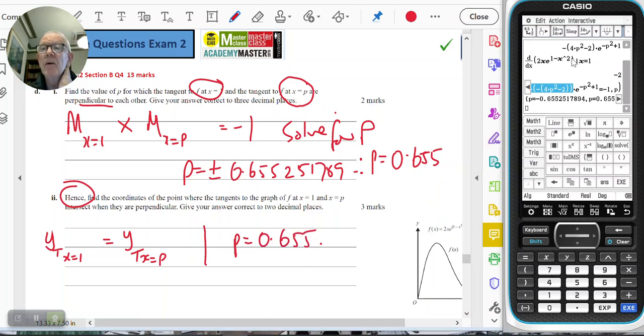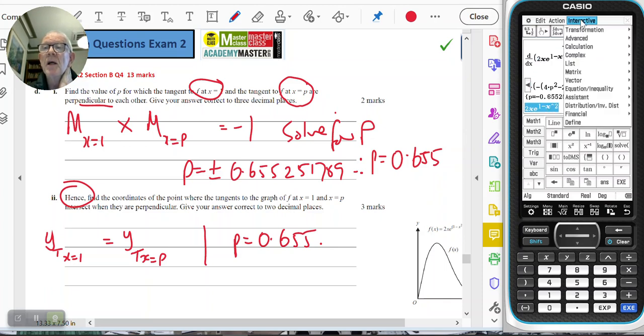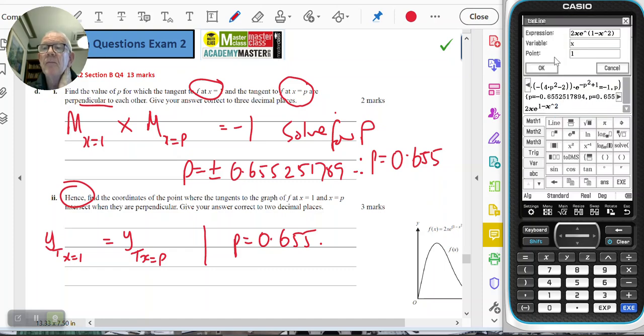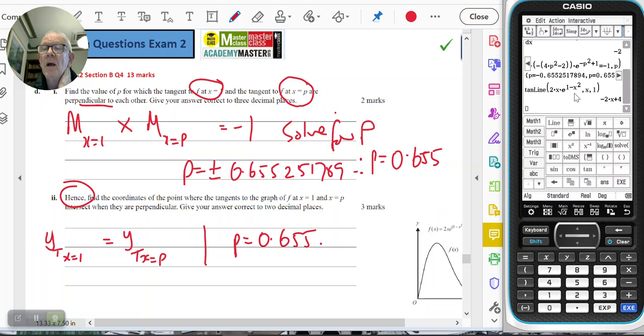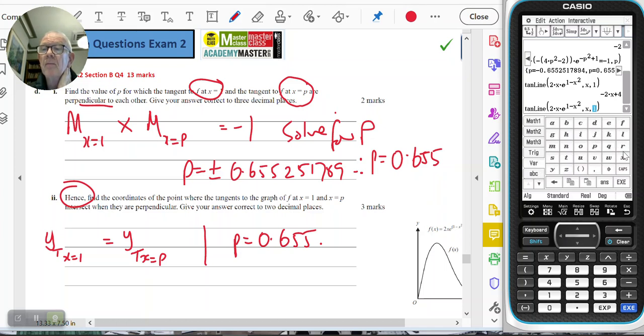On my calculator, I'm going to find the equation of the tangent line at x equals 1, and I'm going to find the equation of the tangent when x equals p and simplify that answer.